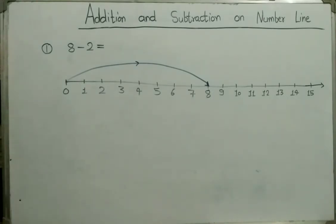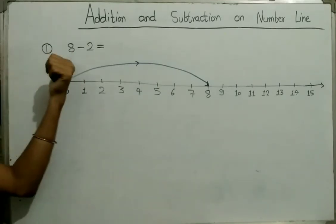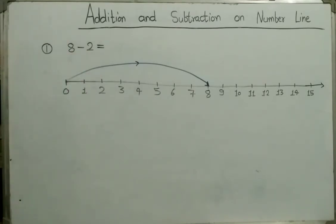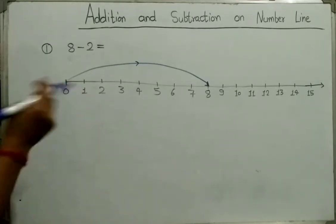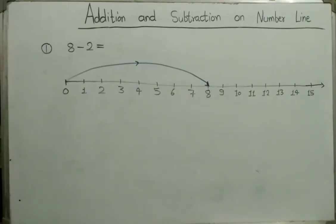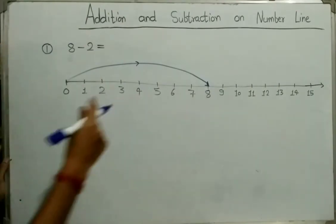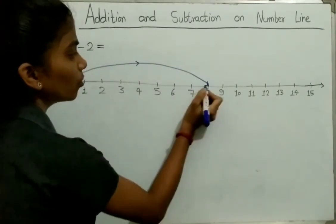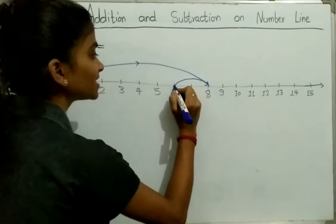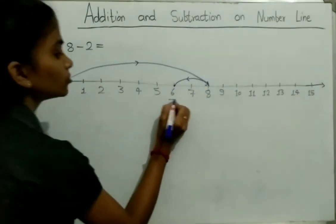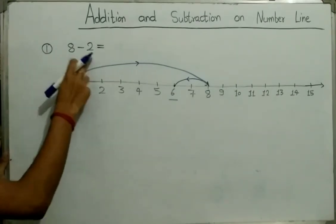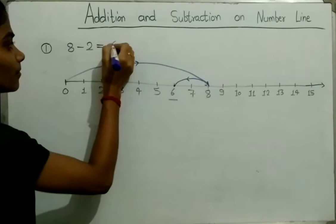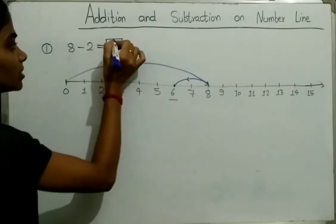Now the second number is 2 and the symbol is minus. So we will start from 8 and jump 2 steps to the left: 1, 2. We reach at 6. So the difference between 8 and 2 is equal to 6. 8 minus 2 is equal to 6.